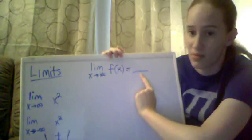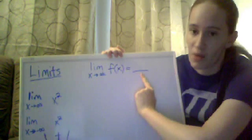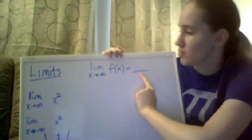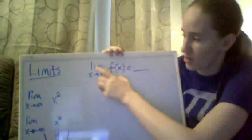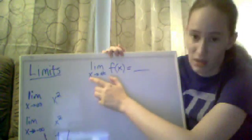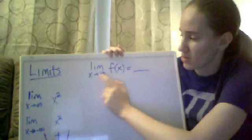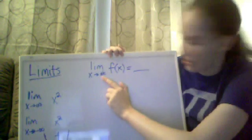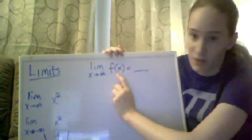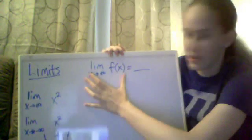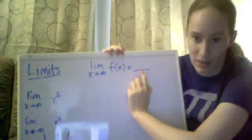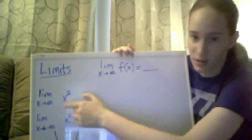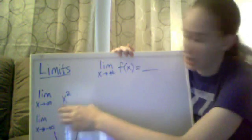Usually that equals a number or positive or negative infinity. This is the way you're supposed to set up writing it: you have the limit, then underneath that it's X approaches with an arrow, whatever your number is, then you write the function, and this whole thing equals something. So what we've done so far is describe what is happening with the end behavior.